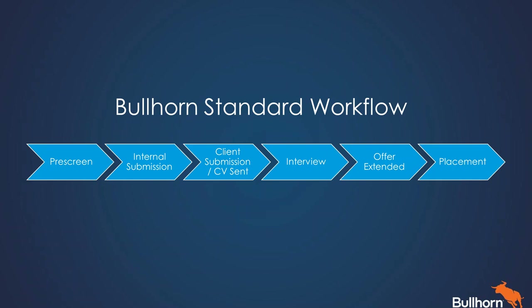What we're looking at on the screen right now is Bullhorn's standard workflow. As I run through these different steps, you may have slightly different labels than what you see in our standard workflow. Let's focus on what each of these steps represents. Starting with the pre-screen — a pre-screen is an opportunity to speak to a candidate, someone you haven't necessarily had engagement with before. It allows you to understand who they are, their skills and experiences, to determine if they're a good fit for the types of jobs you have available.